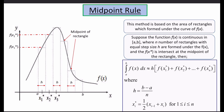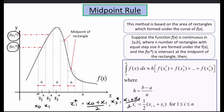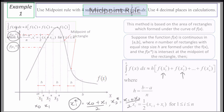We determine the midpoints. Let's say the starting point is x₀ (or a), and the second point is x₁. We determine x1* equal to (x₀ + x₁) divided by 2. For x2*, x2* equals (x₁ + x₂) divided by 2, and so on. Then you substitute this value of x* into f(x).